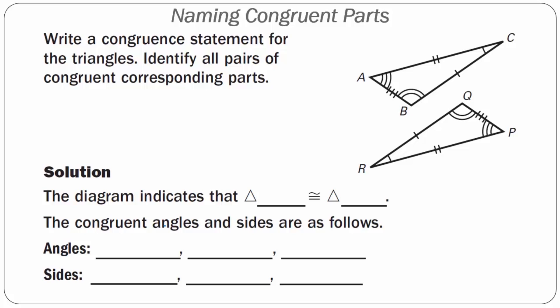Our first step is to write the congruent statement. When writing congruent statements, we want to follow a pattern. We look at triangle ABC, which goes from three arcs to two arcs to one arc in the angles. Following the same pattern — three arcs is P, two arcs is Q, one arc is R — we can say that triangle ABC is congruent to triangle PQR.